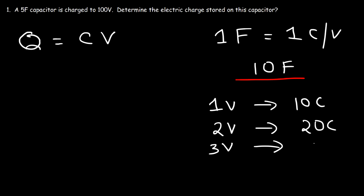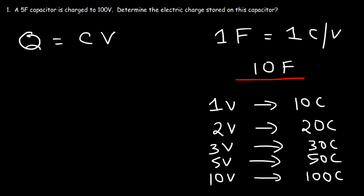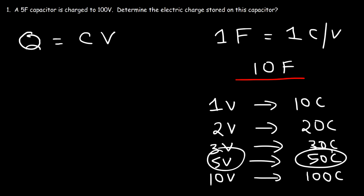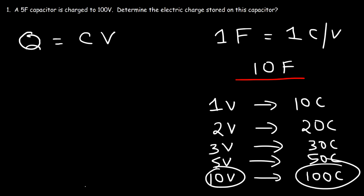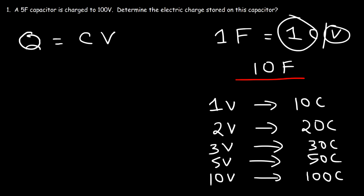If we connect it across a 3-volt battery, it can store 30 coulombs. If we put it across a 5-volt battery, it can store 50 coulombs. And if we use a 10-volt battery, 100 coulombs. So the ratio between the amount of charge that the capacitor can hold and the voltage across the capacitor is always equal to 10. A 10-farad capacitor can hold 10 coulombs of charge per volt applied to it. So a 1-farad capacitor can hold 1 coulomb per volt, and capacitance tells us how much charge a capacitor can store when 1 volt is applied to it.